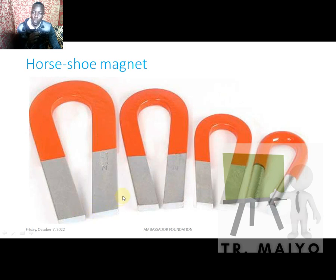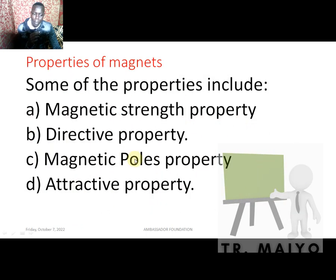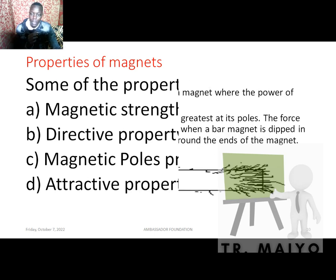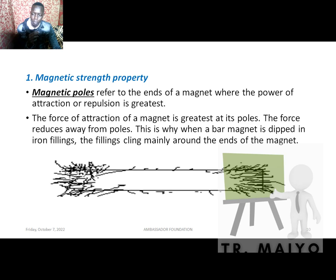Properties of a magnet include: magnetic strength, directional property, magnetic poles, and attraction and repulsion property. Starting with magnetic poles — a magnet has a north pole and a south pole. The strength of a magnet lies within the poles. If you sprinkle iron filings over a magnet, you realize the iron filings only cling at the ends, at the poles, because that is where the strength of the magnet lies.